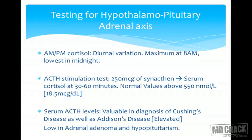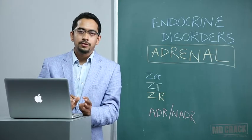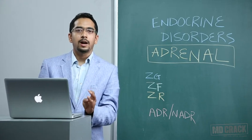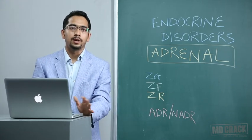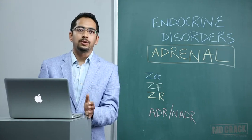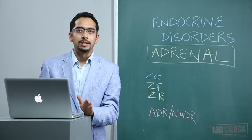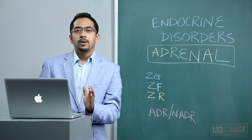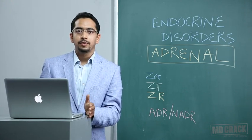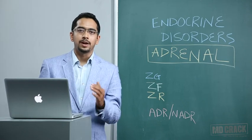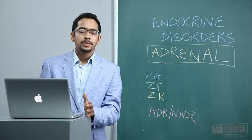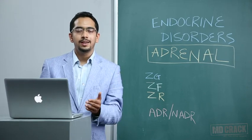How do we test the hypothalamo-pituitary-adrenal axis? Remember that aldosterone is not under pituitary control, so even if you have a pituitary lesion, your cortisol will be affected and androgen secretion may be partly affected, but aldosterone or mineralocorticoid secretion is not affected in pituitary lesions. Cortisol production is dependent on ACTH, so whenever we have hyper- or hyposecretion of adrenal cortisol, we have to test for the HPA axis.